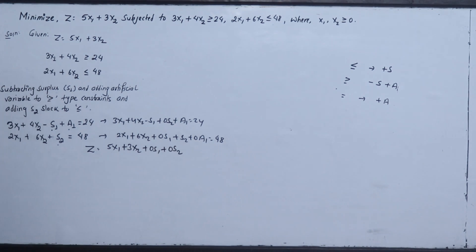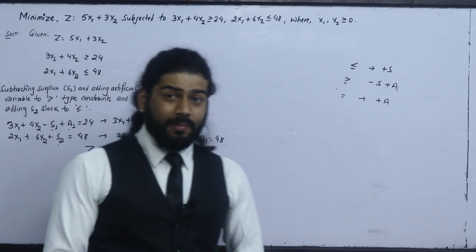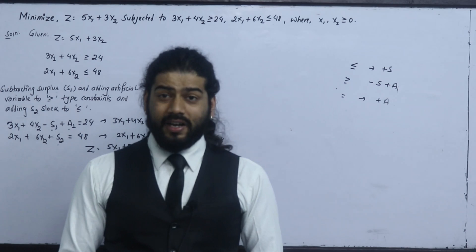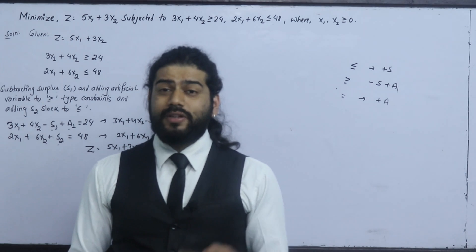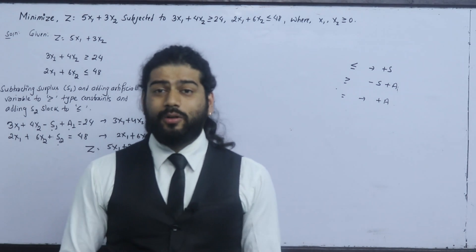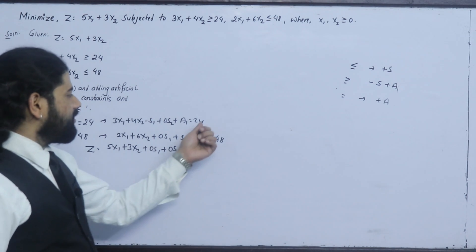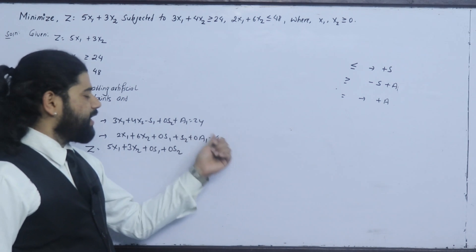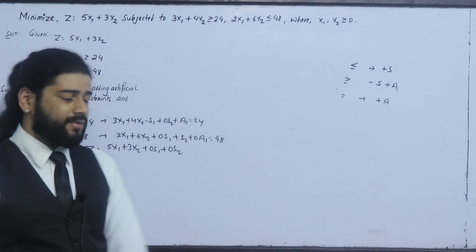We also need to handle the artificial variable. We have to add M times the artificial variable to the objective function. We have to do this constant and apply it appropriately — M is the big-M penalty coefficient used in the minimization objective.